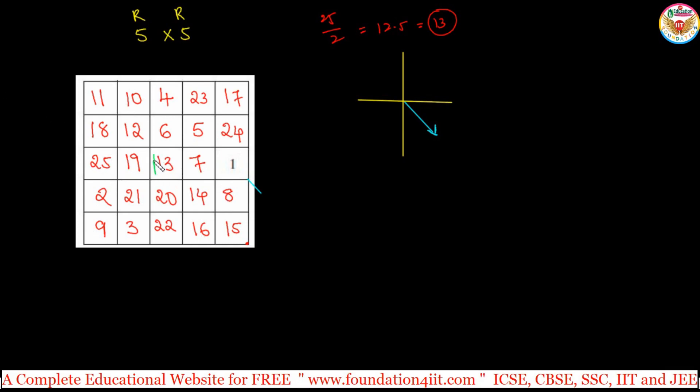Exactly center number is 13 we got. Some of the rows and some of the columns in every row and every column is exactly equals to 65 will come. Because it is a 5 rows, 5 columns. Center number is 13. So 13 times 5 is 65. Some of the every row you can add, 65 will come. All 65. Even columns. Some of the numbers in the column. 11 plus 18 plus 25 plus 2 plus 9. Exactly equal to 65.